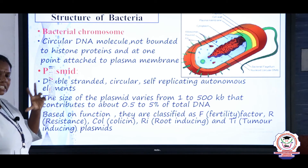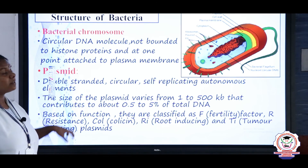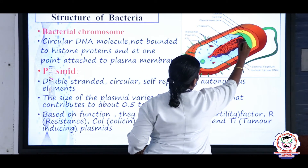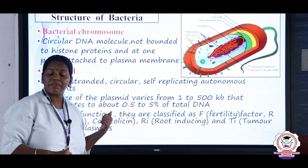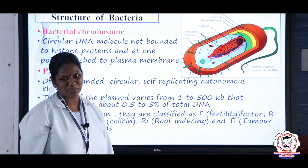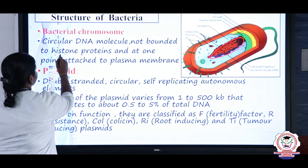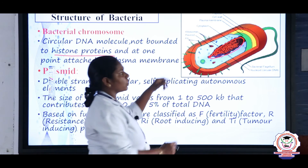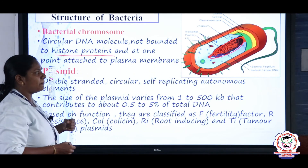Bacteria have two types of genetic material: the bacterial chromosome and the plasmid. The bacterial chromosome is a nucleoid present in the center of the cell, not bounded by any membrane. Unlike eukaryotic cells, histone proteins are absent here, and membrane-bound organelles are absent. One end of the nucleoid is attached to the plasma membrane.